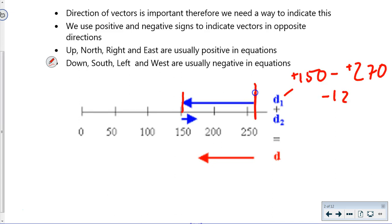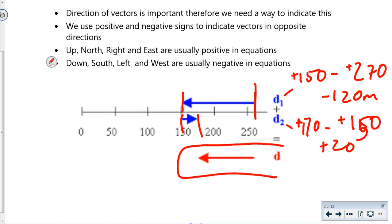For d2, we started at 150 and finished at 170. Final 170 minus initial 150 gives us a displacement of positive 20 meters. To find total displacement from start to finish, we add negative 120 plus positive 20.